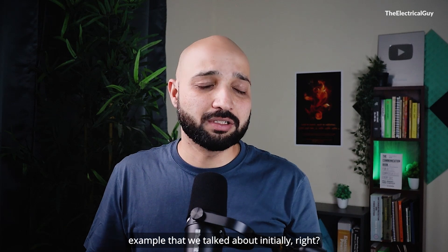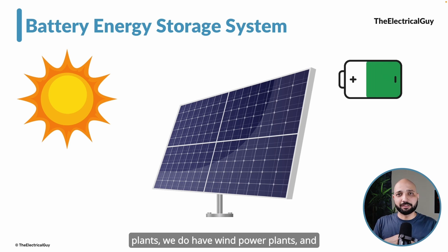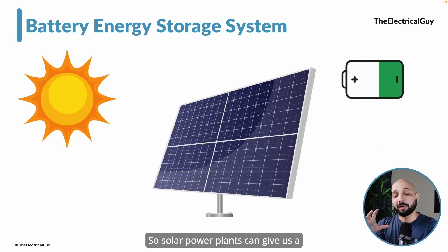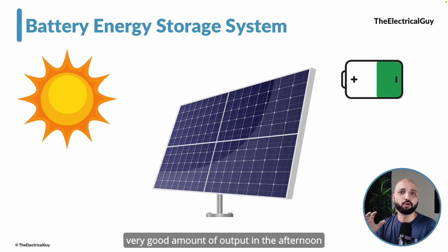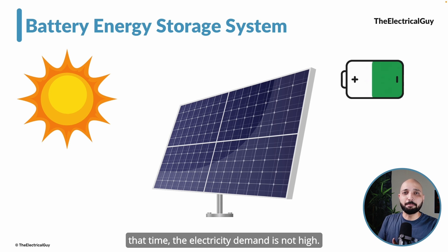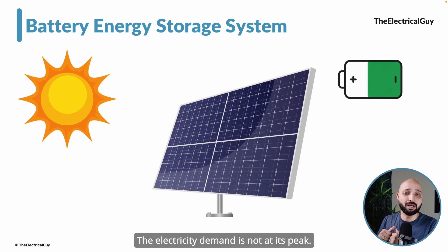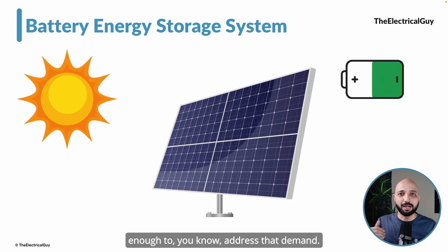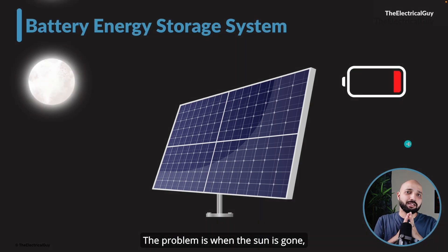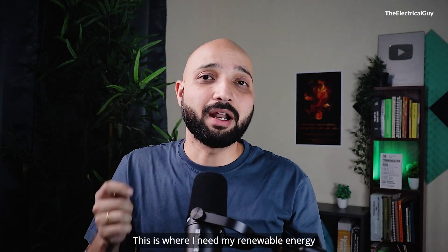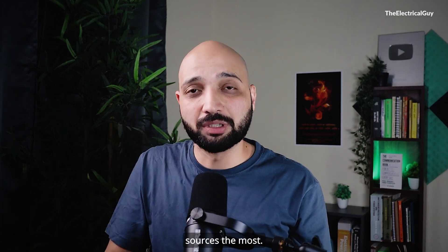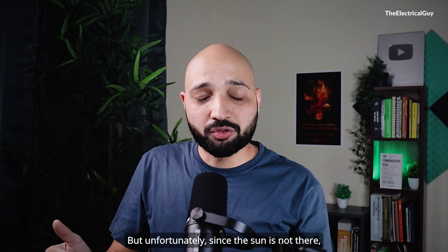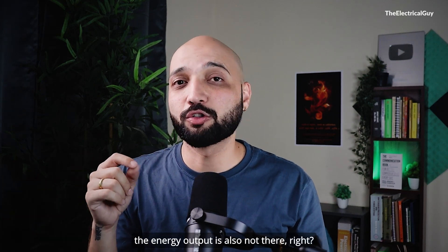Let's continue with the renewable power generation example. We have solar power plants and wind power plants. Solar power plants give a good output in the afternoon when the sun is out, but during that time electricity demand may not be at its peak — base power plants are sufficient to address that demand. The problem is when the sun is gone, solar stops producing power, and that is exactly when peak demand occurs and additional energy is needed most.